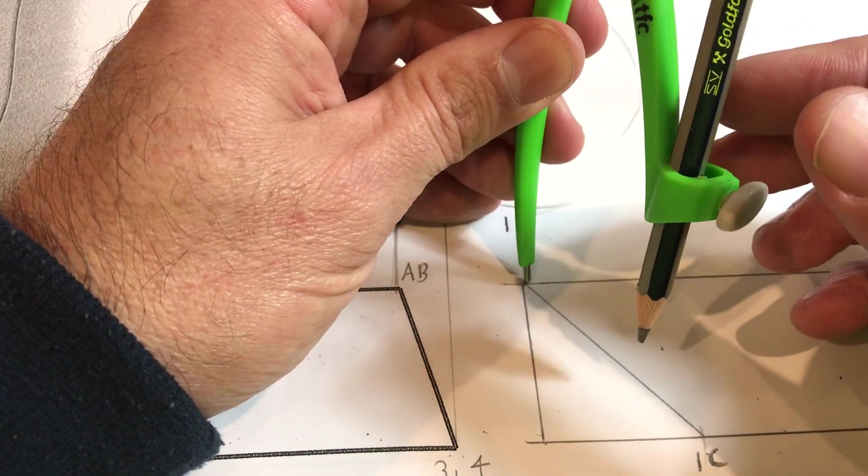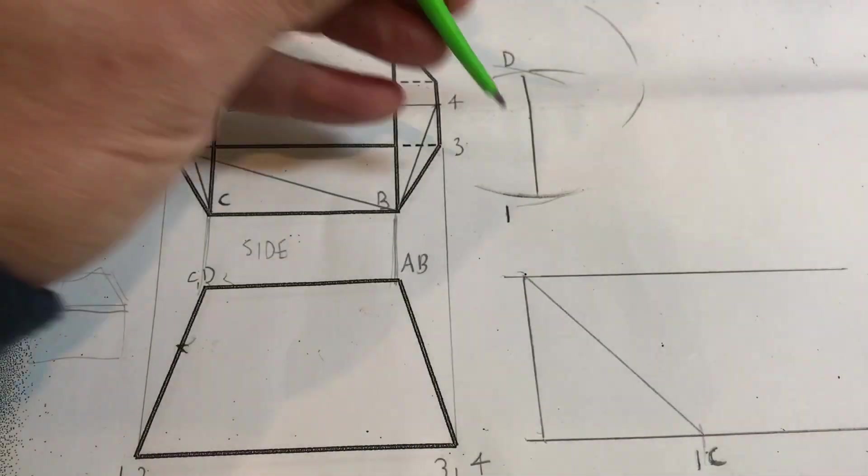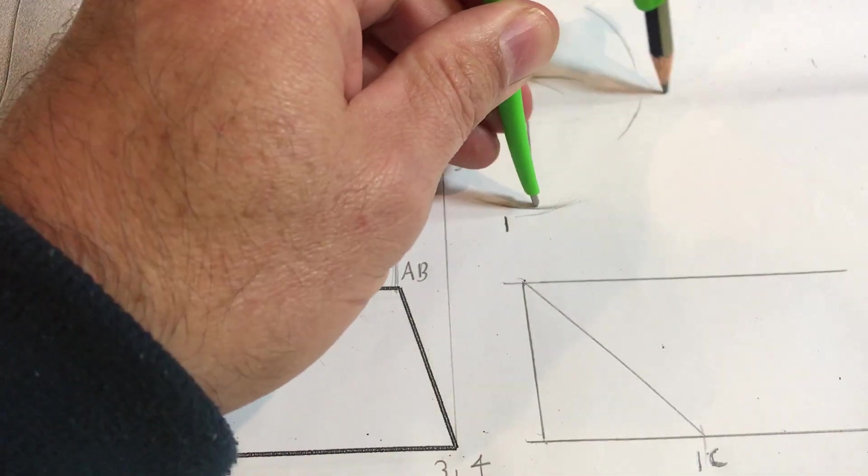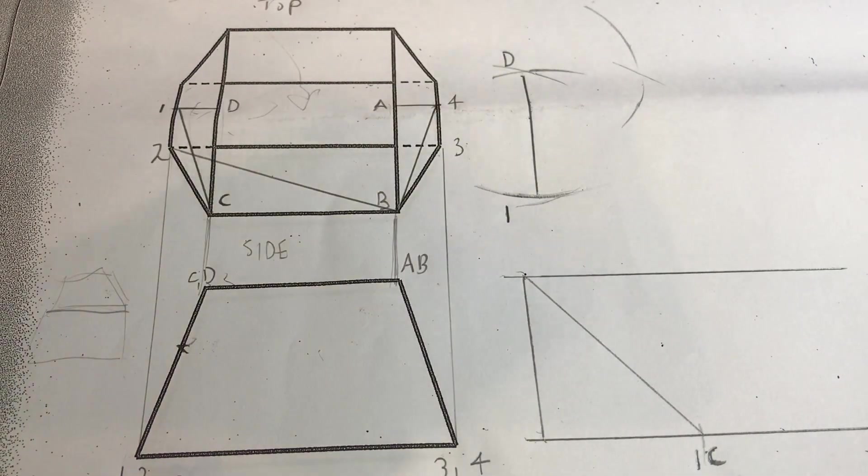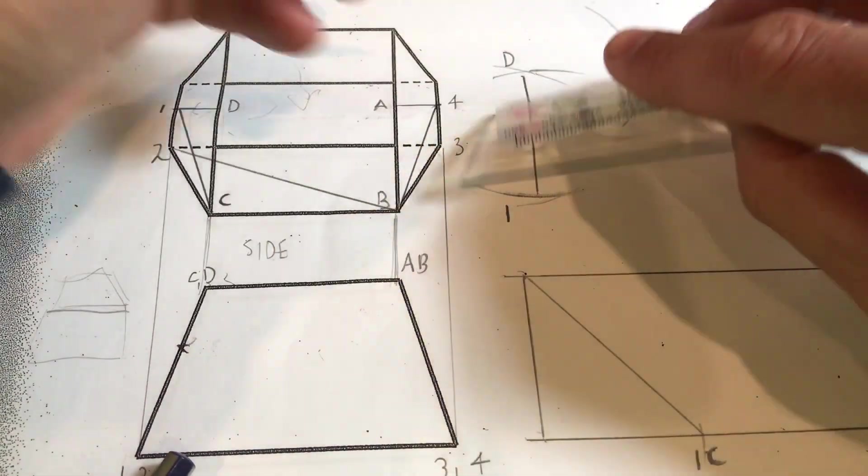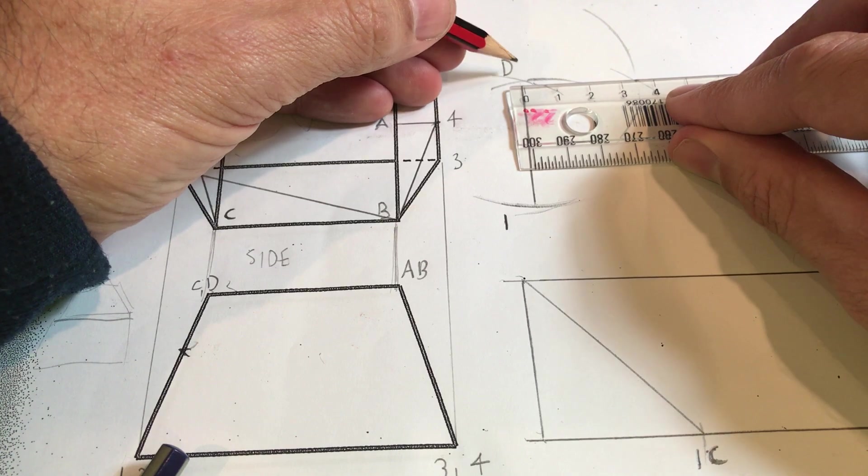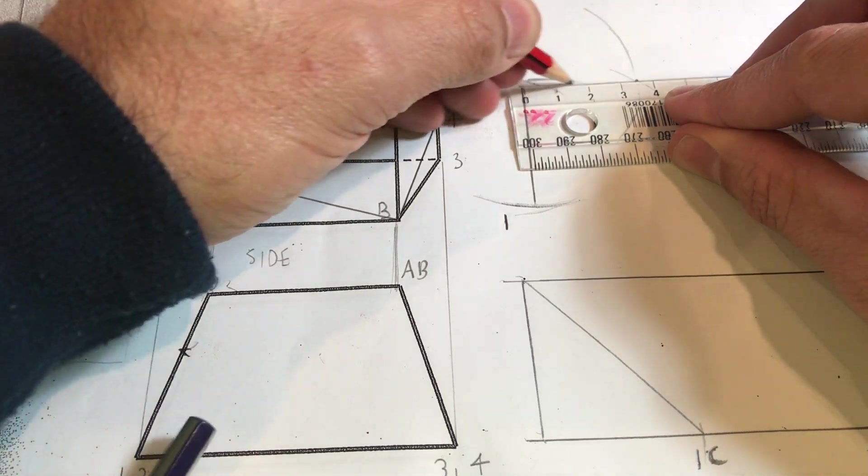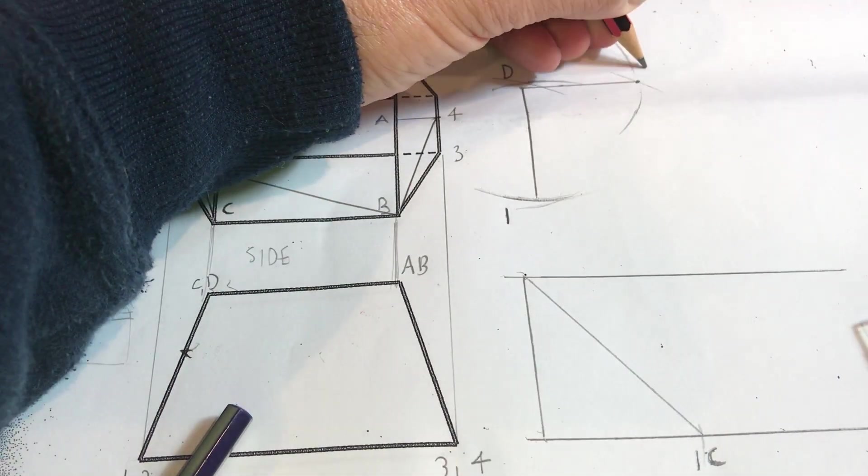So now what I'm going to do is I'm going to get my compass, set it up here on 1C, and I'm going to go from 1, and I'm going to swing. And I get a point where they cross, where those two arcs cross.